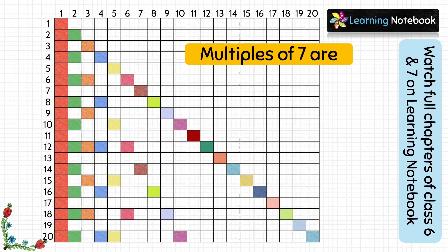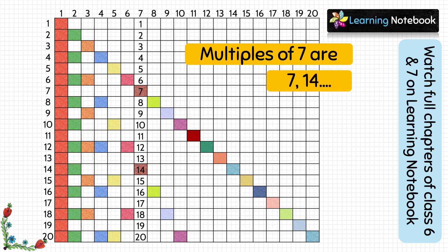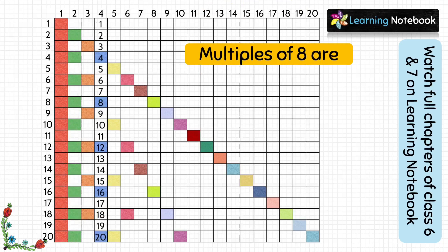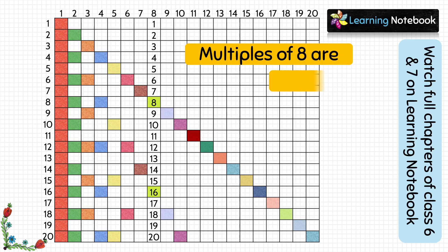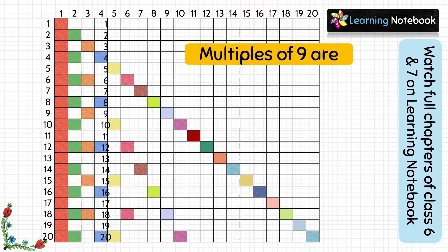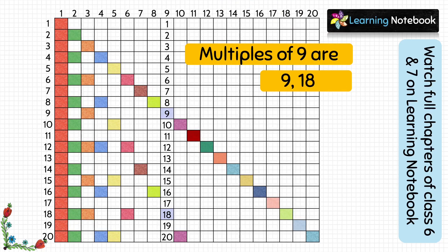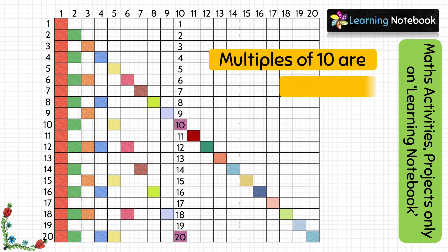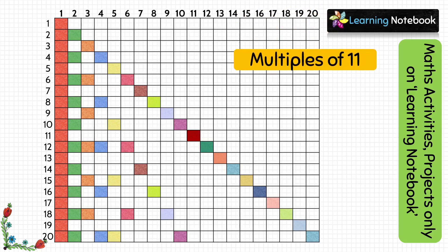Now look at column 7 — we will get multiples of 7 here. The colored boxes are 7, 14 and so on. Looking at column 8, the colored boxes are 8, 16 and so on — these are the multiples of 8. Similarly, multiples of 9 are 9, 18 and so on. And multiples of 10 are 10, 20 and so on.